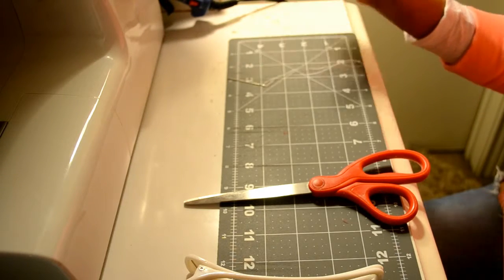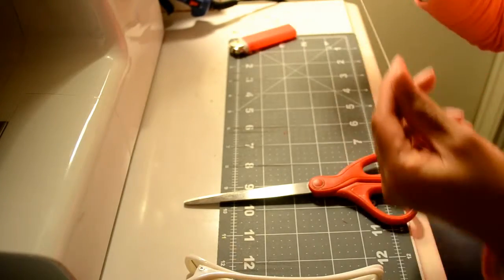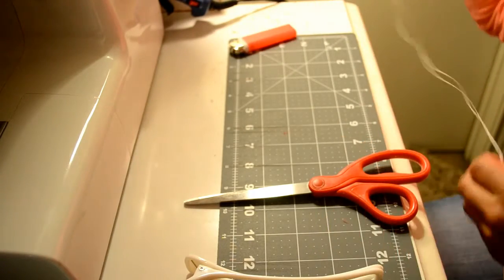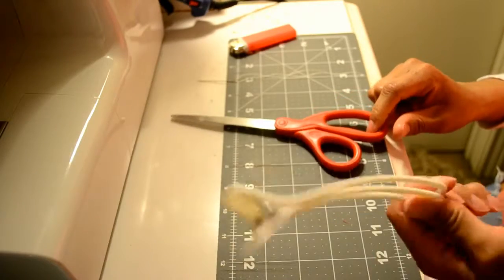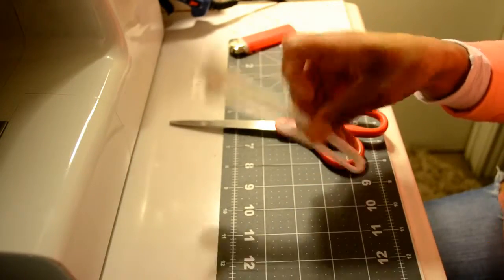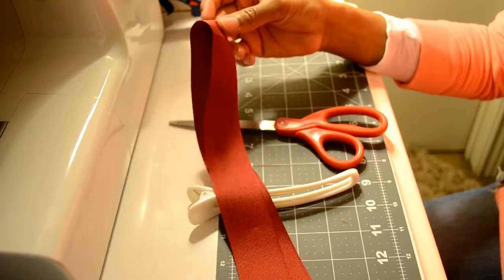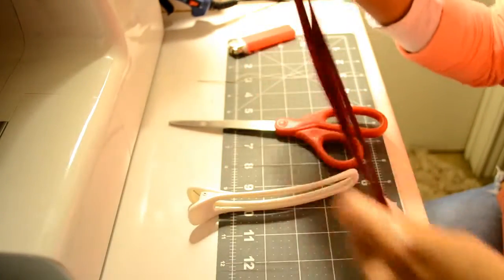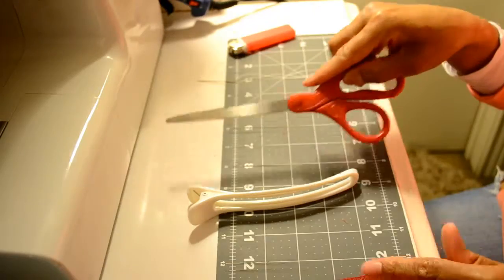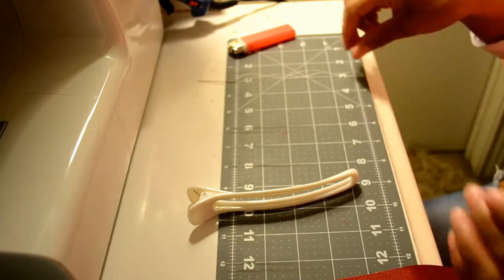What you'll need is a lighter, needle and thread. Make sure you knot it at the end. Scissors, hair clip like that, and one and a half inch grosgrain ribbon cut to 23 inches. I've already went and cut this, so let's get started.